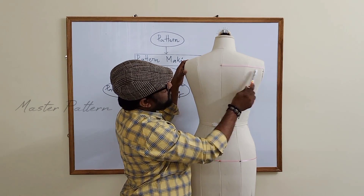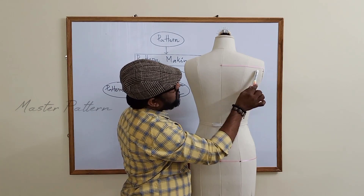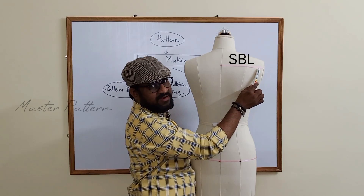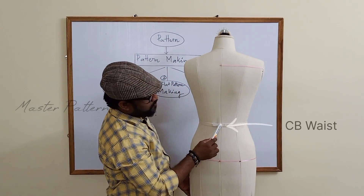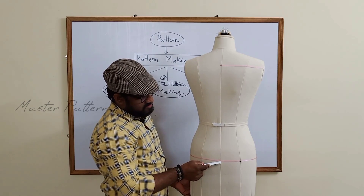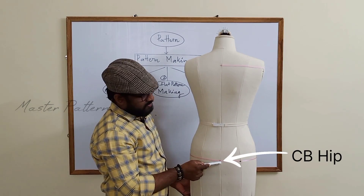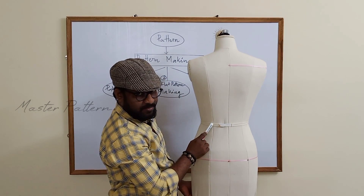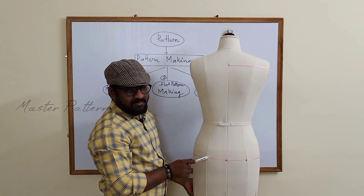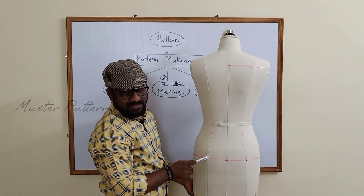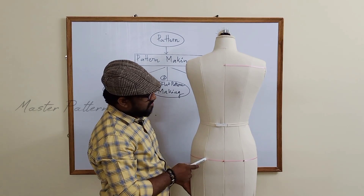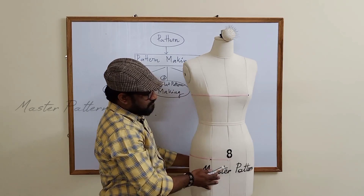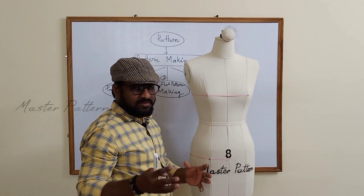Measuring four inches down from the center back, a style tape is placed perpendicular to the center back line — this level is called the shoulder blade level, or SBL. This point is the center back waist, and this is the center back hip level. You can also see the back princess waist and back princess hip level.